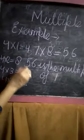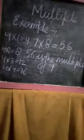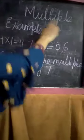4, 8, 12, and 16 are the multiples of 4. That is called a multiple. Now, we take some questions.